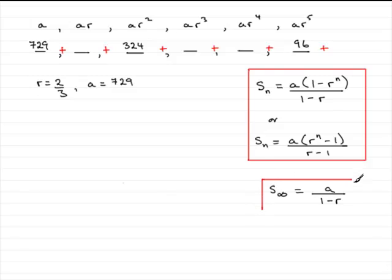And you should already know this, but as I say, I'm just quickly running through that for you. So the sum to infinity for this question is going to be a, which is 729, all divided by 1 minus the common ratio, 2 thirds.